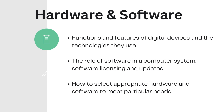The first main topic is hardware and software. The scope of this topic is to learn the functions and features of digital devices such as computers, smartphones, printers and hard drives, and the technologies they use. It also covers the role of software in a computer system, software licensing types and updates, and how to select appropriate hardware and software to meet a given scenario. Students should be able to analyse the scenario, select suitable hardware and software, and justify the reasons for their selection.